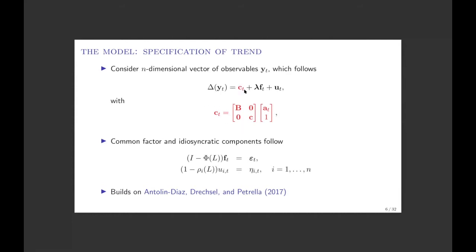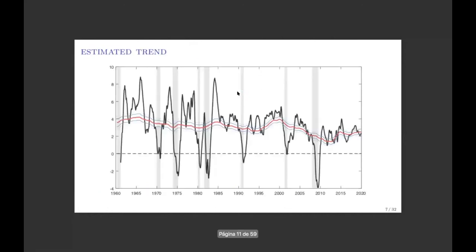This is how the time-varying intercept for GDP looks. You can see it aligns well with the narrative — the productivity slowdown in the 1970s, the subsequent acceleration in the late 1990s, and the latest productivity slowdown with perhaps a little bit of a recovery in the last few years.